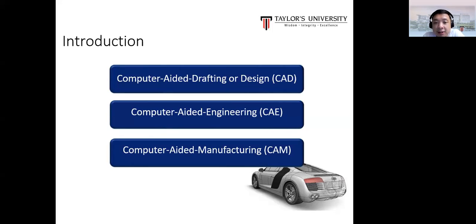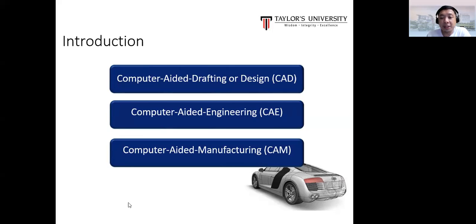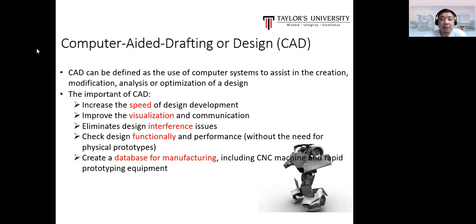When we talk about CAE or CAD, there are three main categories: CAD — computer-aided drafting or design; CAE — computer-aided engineering; and CAM — computer-aided manufacturing. All three use computer software to help with different parts of the engineering process, and in this lecture we will look at the differences between them.